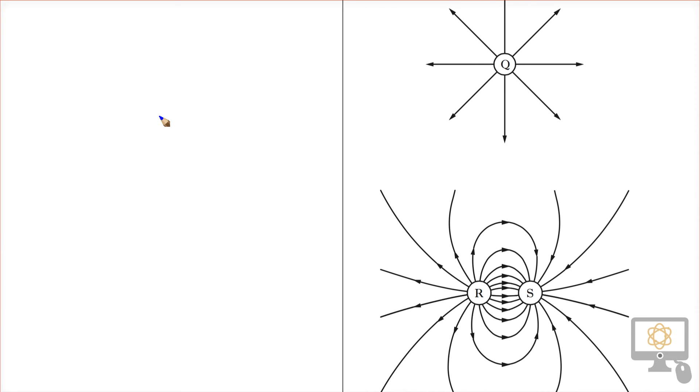So the field line like that shows the direction a positive charge placed in it would experience a force upwards. So it's all about positive charges.